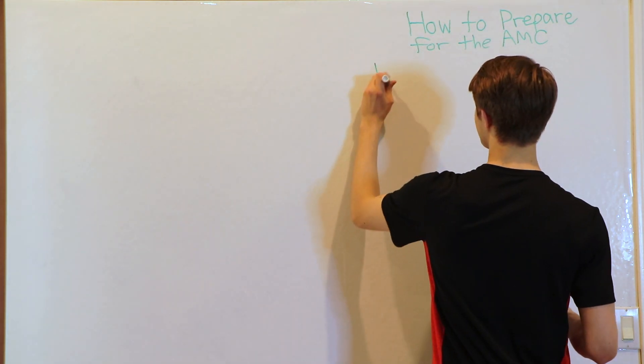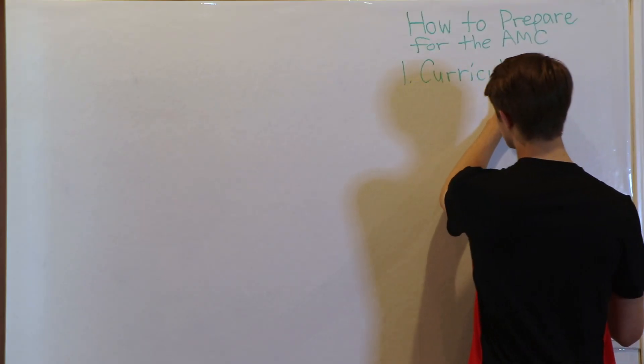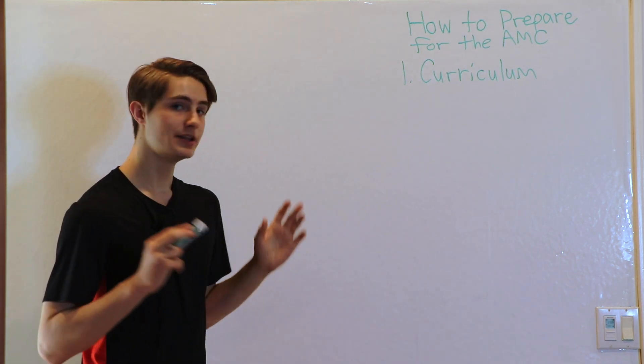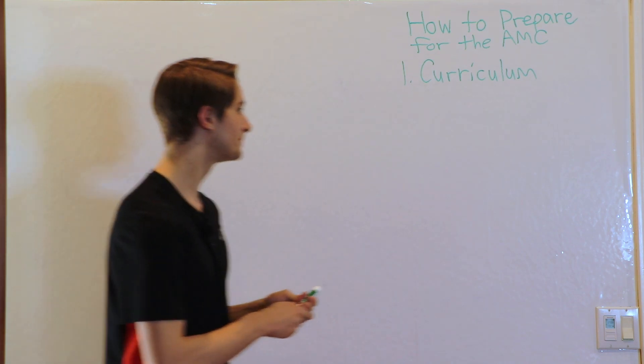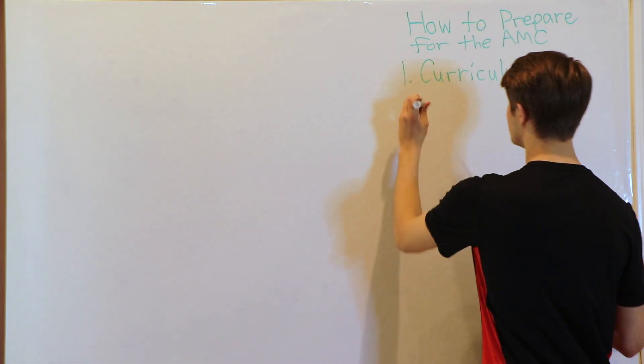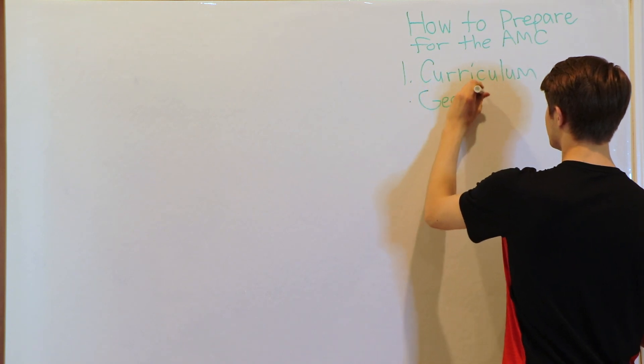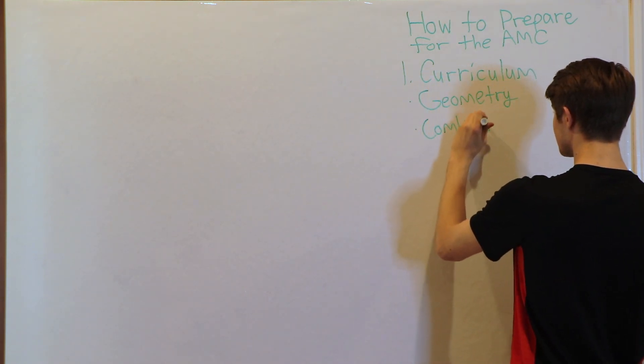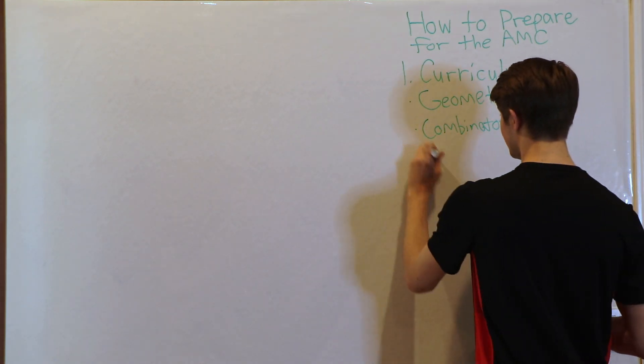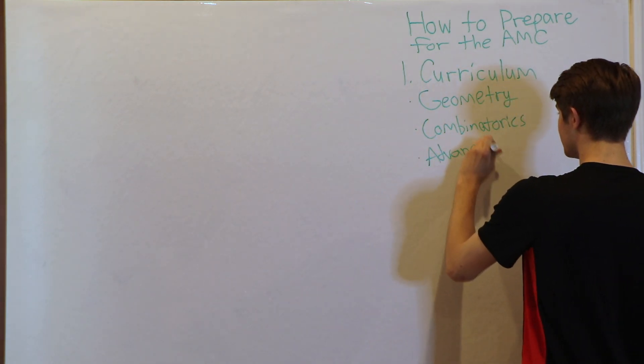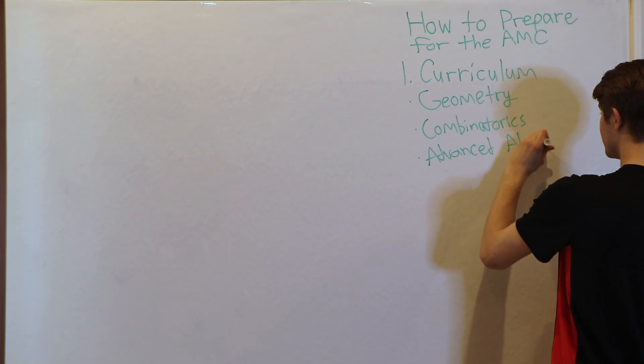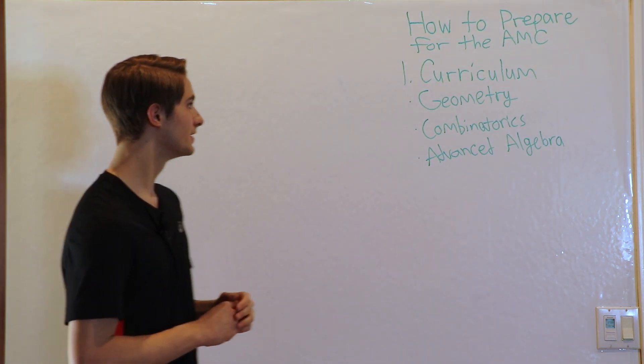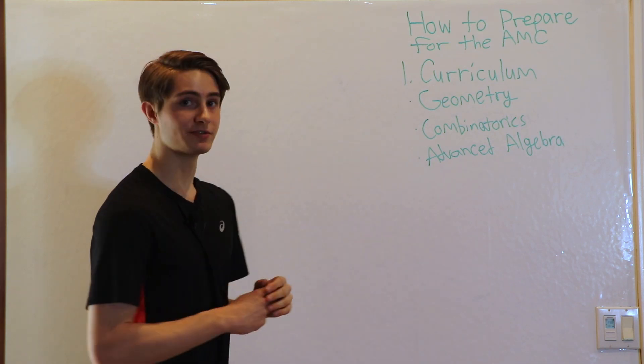Now the first thing that we're going to talk about is curriculum. And what this means is that there is a base set of knowledge about certain mathematical areas that you need in order to start going into the AMC. I'll list a few, these are some but definitely not the only things that you want to know. You're going to want to know a certain amount of advanced geometry, you're going to want to know combinatorics, and you're going to want to know advanced algebra, meaning you want to have the ability to manipulate expressions, know things like the exponent rules down pat so that you can apply them quickly and understand when it would be a good idea to use them. Now again these aren't the only areas, but they are some of the primary ones.